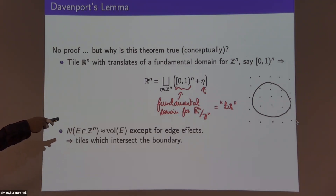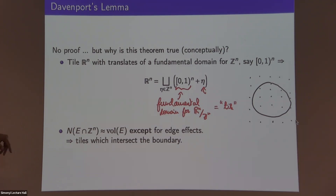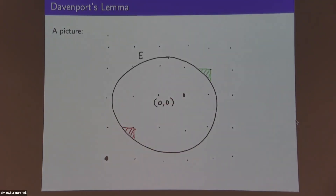The number of integral points inside E is approximately equal to the volume. You count all the lower left-hand corners of little tiles, and each tile has area or volume one, giving a nice correspondence — except that you have edge effects. The tiles that intersect the boundary are not going to lie entirely within E, and so they'll contribute only a fraction of their unit volume to the actual volume of E.